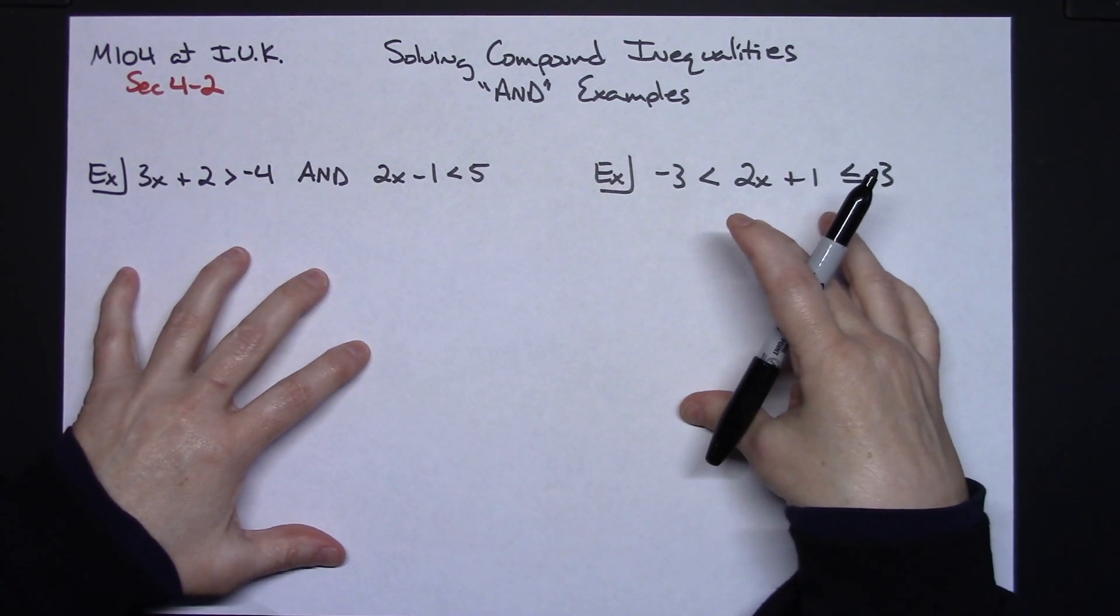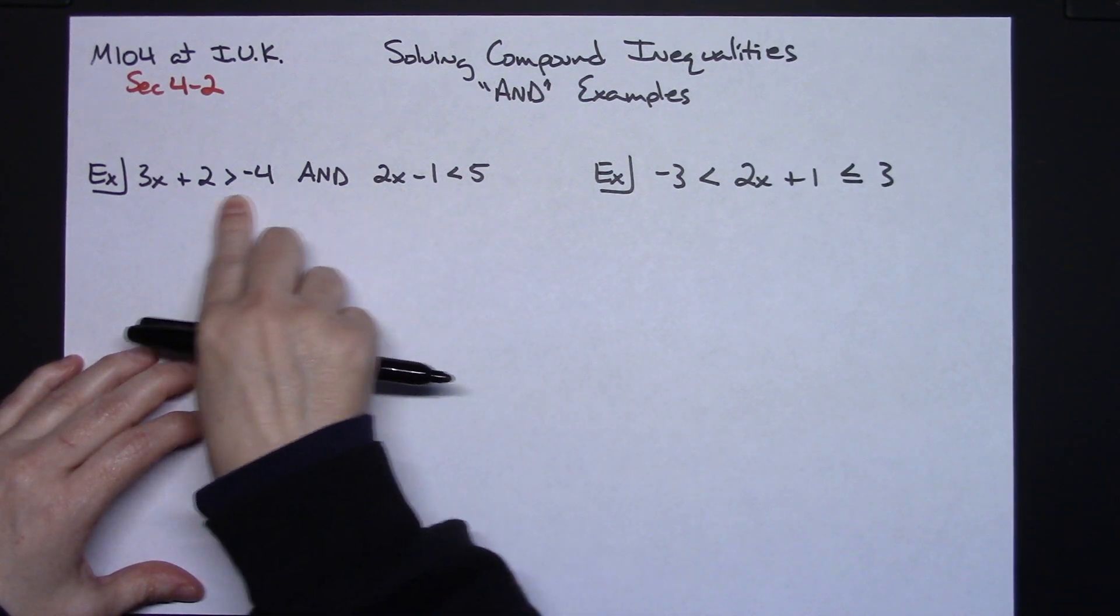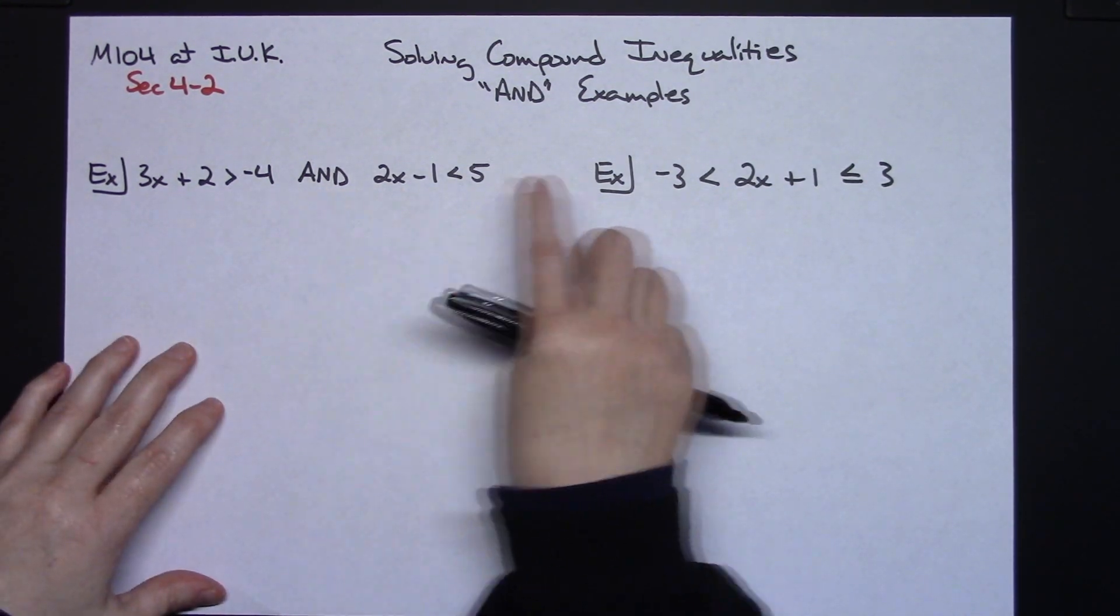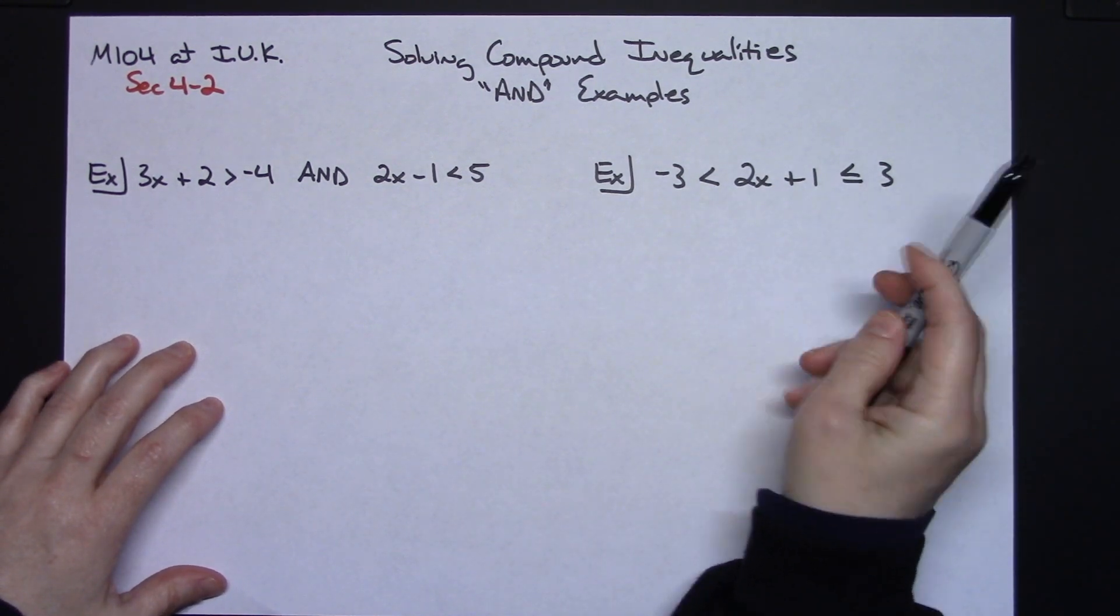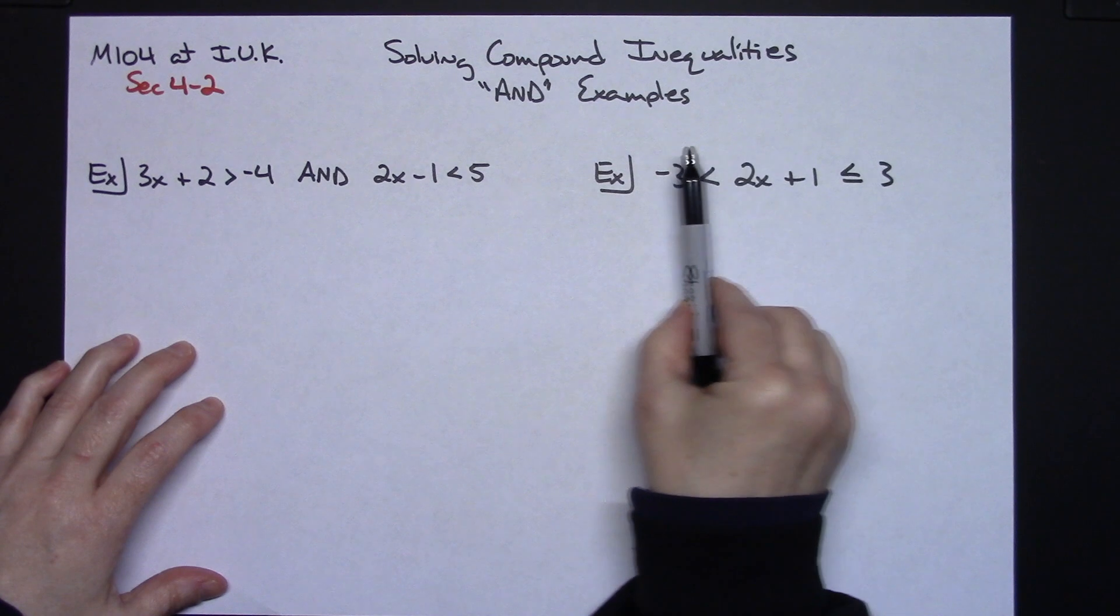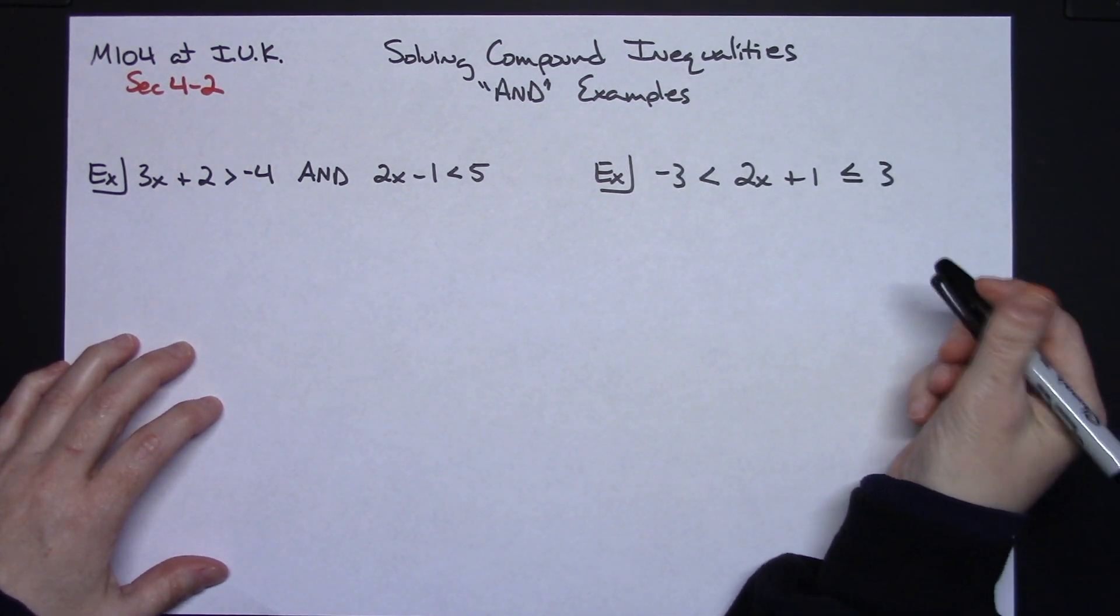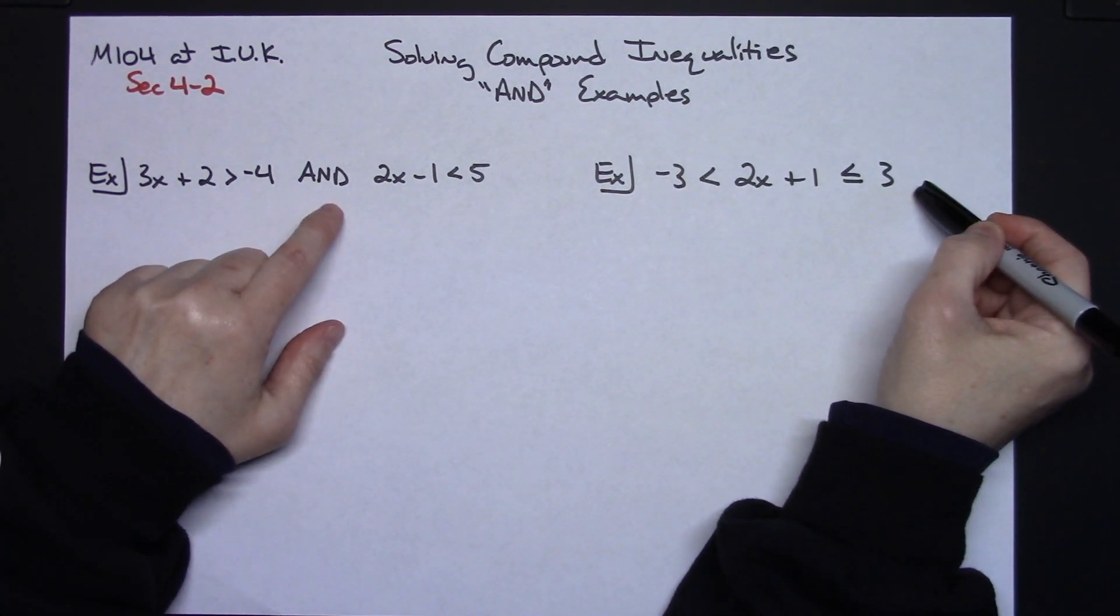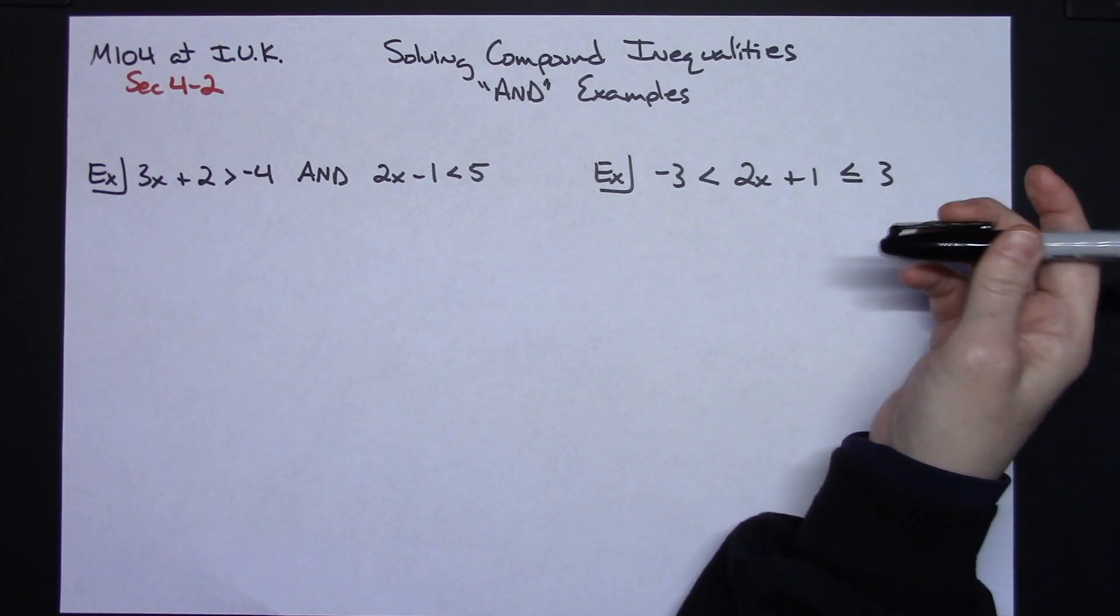I've picked these two examples specifically because the problem looks different. On this example right here, you specifically see the word AND in it, so you know it's an AND problem. This is what a compound AND inequality looks like. You could have anything here in the middle, anything over here, and anything over here as well. This one is a relatively simple one. But it can be written in this format and does not have to have the word AND in it for it to be a compound inequality involving AND.